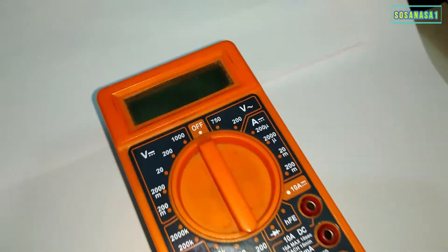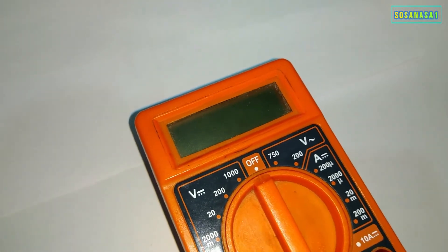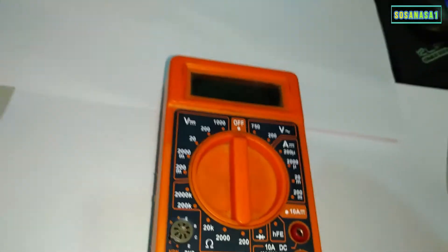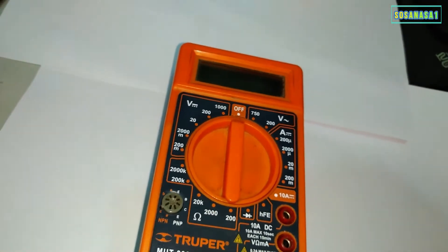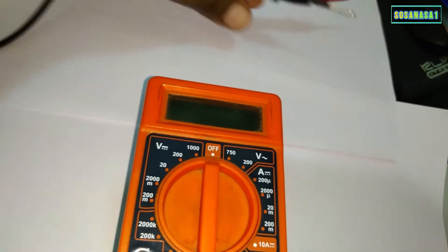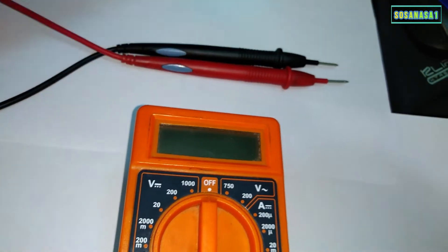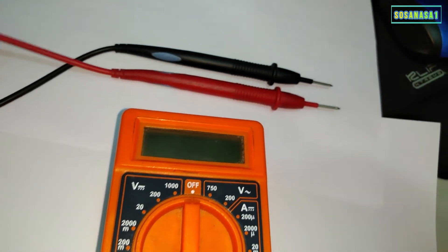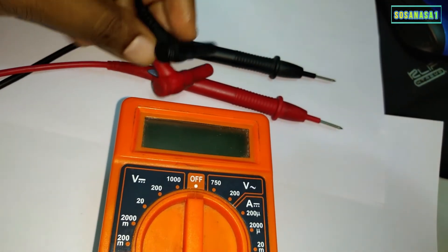When you buy this multimeter, it includes the cables and connectors. These connectors, one is black and the other is red.